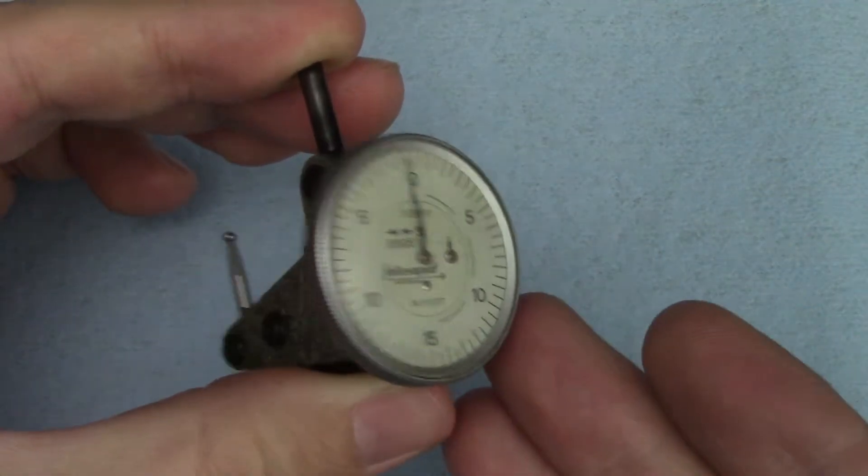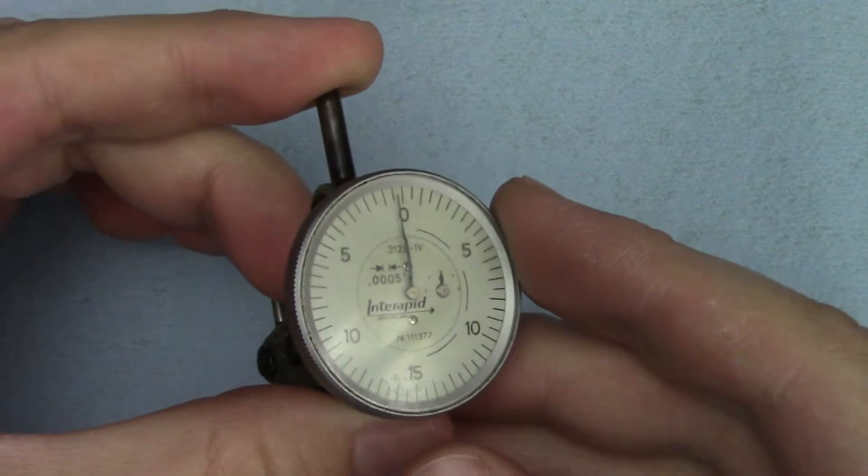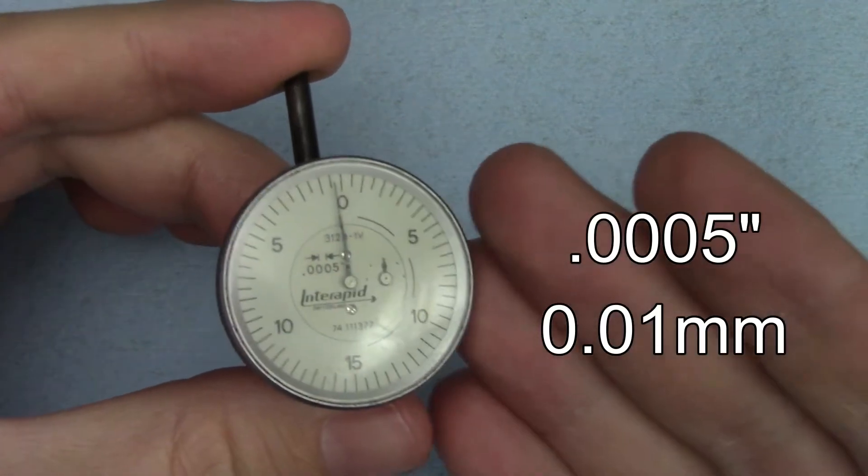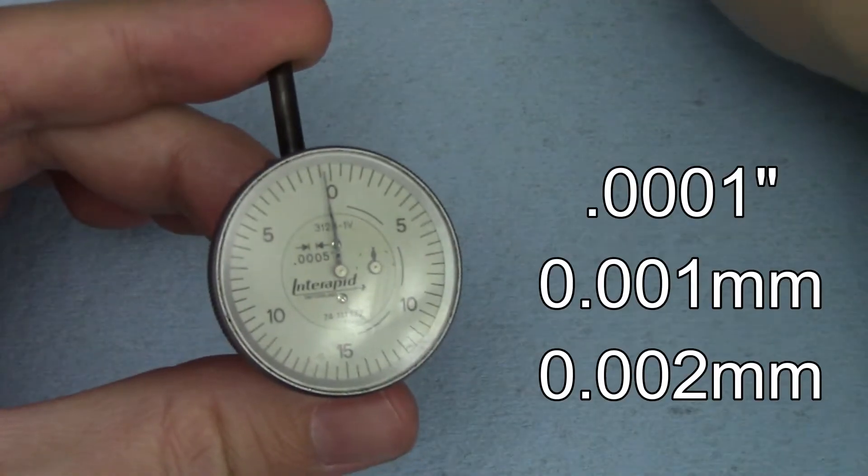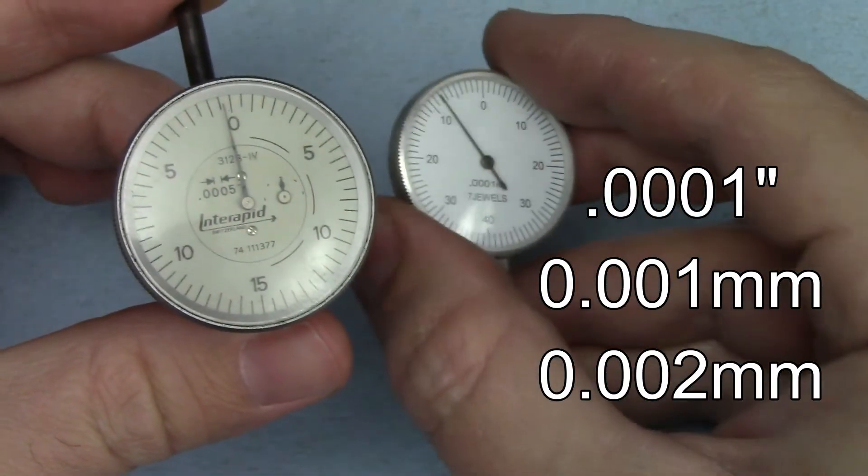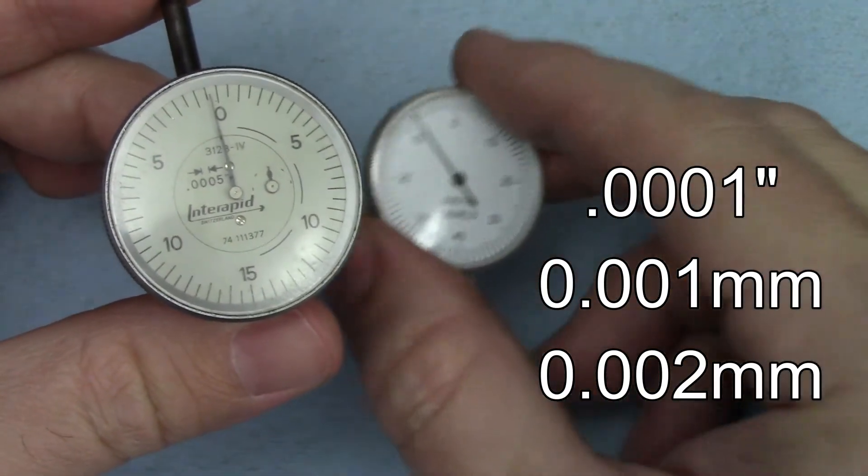Dial test indicators like this are similarly found with a variety of graduations, with half thousandths and hundredths of a millimeter being the most common in each. But tenths and one and two micron versions are hot on their heels.